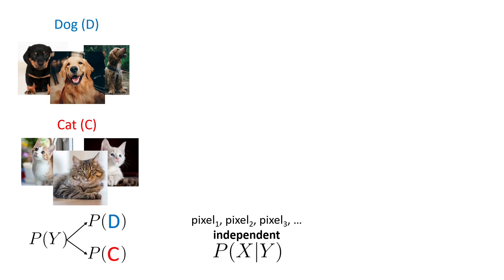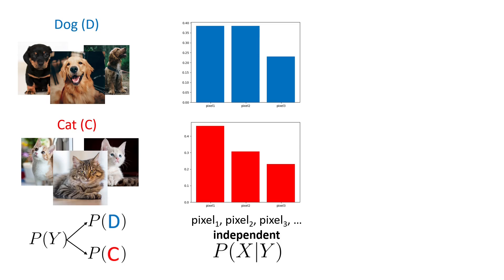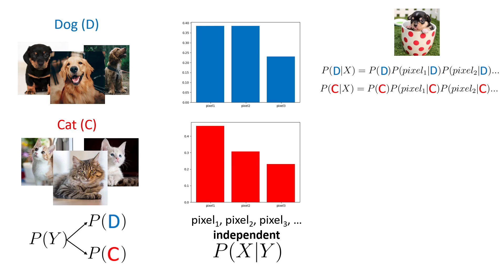And again, to compute the probability of X given Y, we assume the pixels to be independent and count the frequency of each pixel intensity to compute its independent probability. Then when we get a new image, we apply the same methodology of computing the posteriors as in the email spam classification and select the class which has a higher posterior probability.